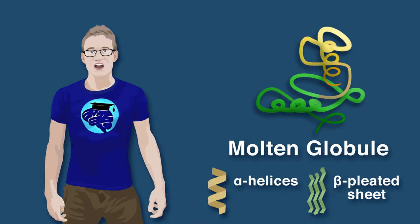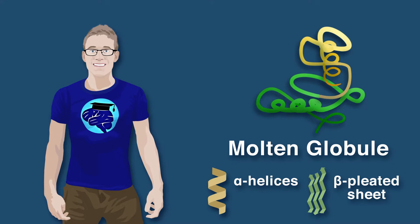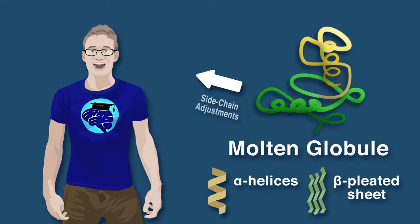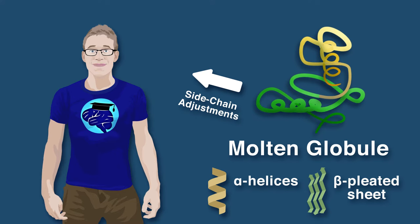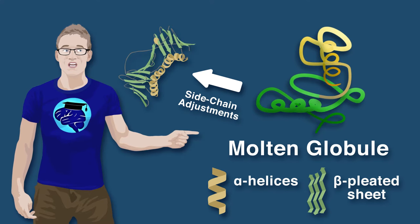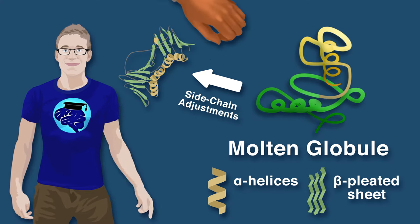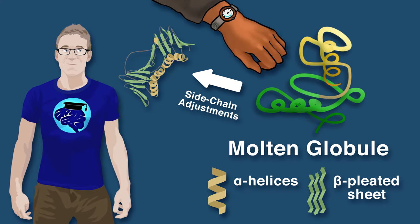While the molten globule stage is usually complete within seconds, it is merely a starting point for the then-slow process of sidechain adjustments until the correct tertiary structure is achieved. This slower process usually takes several minutes.